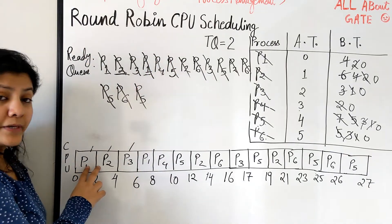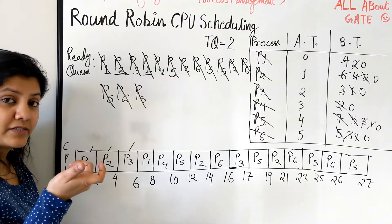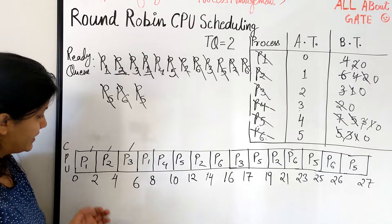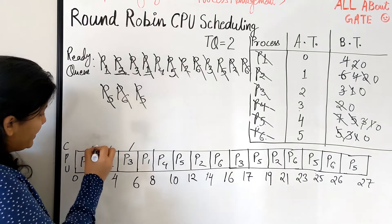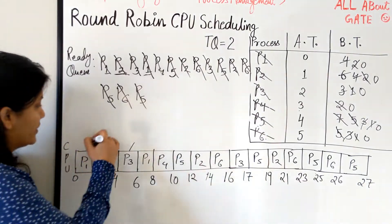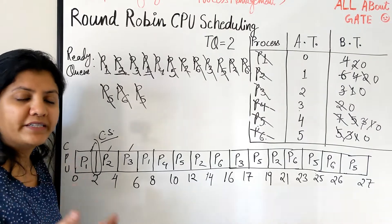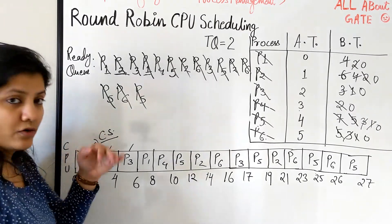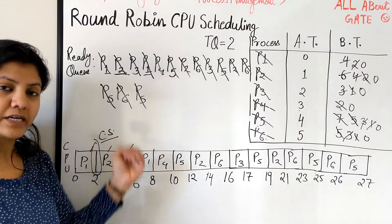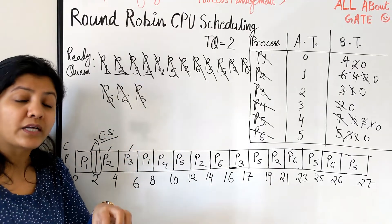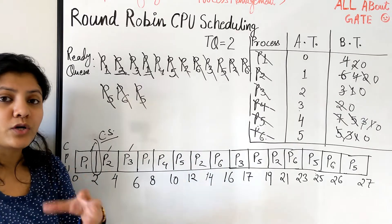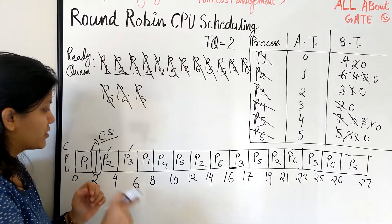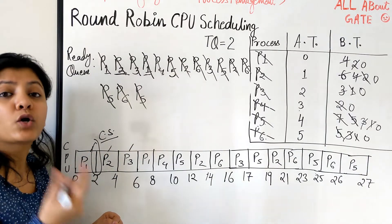This is exactly how processes are executed with Round Robin. An important point: each time P1 finishes its quantum and P2 starts, that transition point is nothing but a context switch. Every time a process goes back into the ready queue and a new process comes from the ready queue, we store the PCB — the context of the old process — and load the context of the new process. That's the context switch.